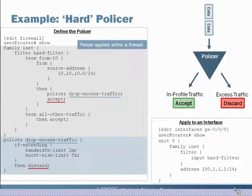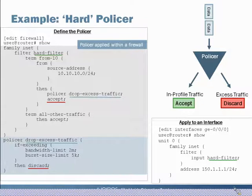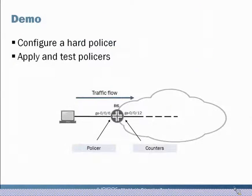We take this firewall filter and apply it somewhere traffic is going to flow through. That takes us to the third component: applying it to an interface. This is the standard approach of applying a firewall filter to an inbound interface.